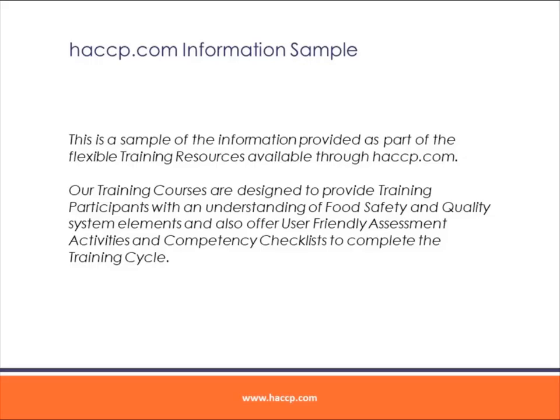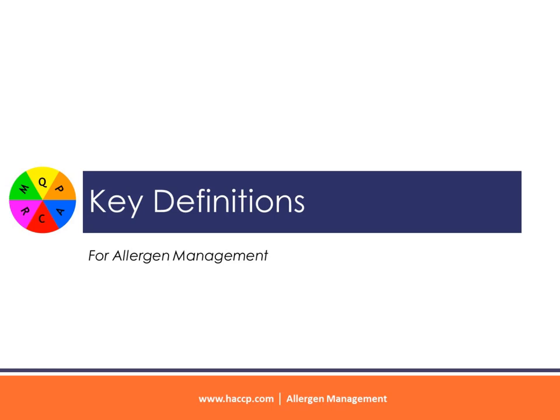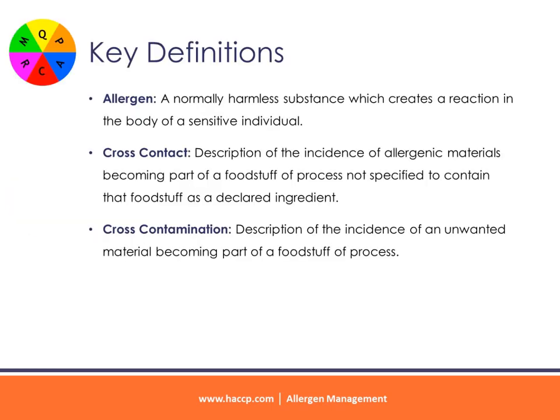This is a sample of the information provided as part of the flexible training resources available through HACCP.com. Our training courses are designed to provide training participants with an understanding of food safety and quality system elements, and also offer user-friendly assessment activities and competency checklists to complete the training cycle.